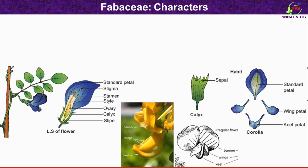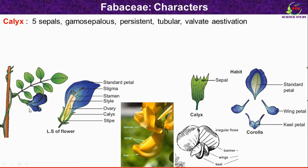Now we will see parts of the flower. First, the calyx. Calyx is made up of five sepals, but they are united and so known as gamosepalous — gamo meaning united. As you can see, there are five sepals: first, second, third, fourth, and fifth, all fused together. The calyx is persistent, meaning even after conversion of the flower into fruit, the calyx remains visible. It is tubular in form, and the aestivation is valvate.